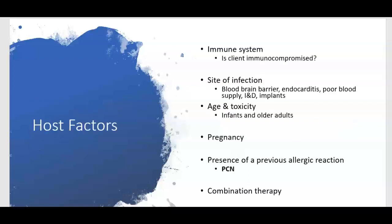Different factors can affect how an antimicrobial works, including the patient's immune system. If a patient is immunocompromised, their immune system isn't working properly. For example, an immunocompromised patient who gets a cut is far more likely to develop a severe infection than a healthy 20-year-old. The body normally does a good job fighting off infection, but if the immune system isn't working up to par, the patient is more likely to have a serious infection and will actually need stronger bactericidal antibiotics.